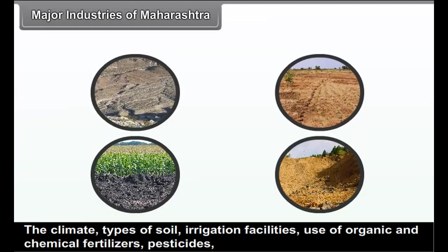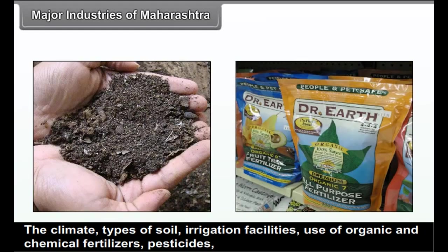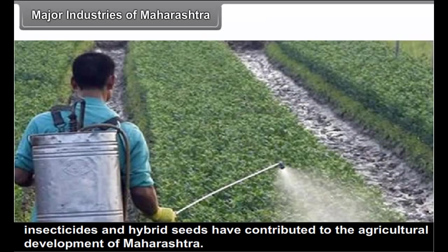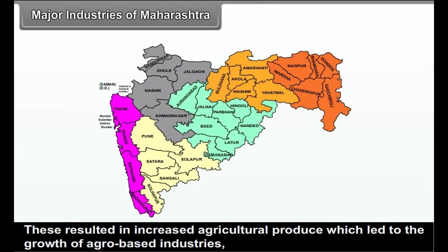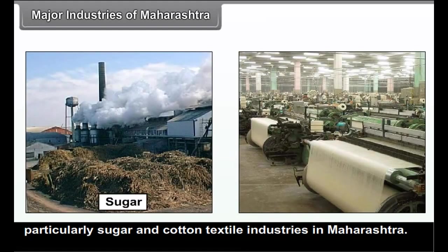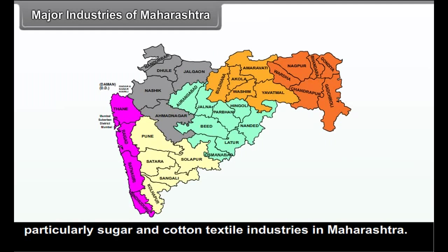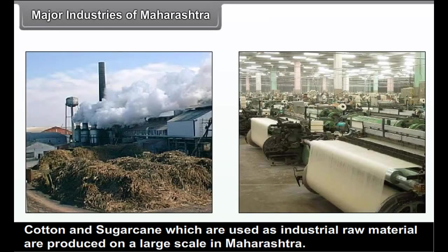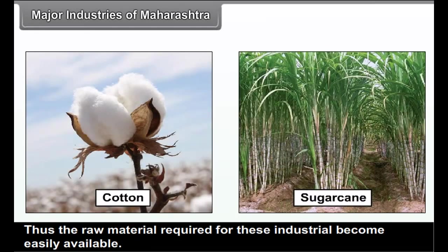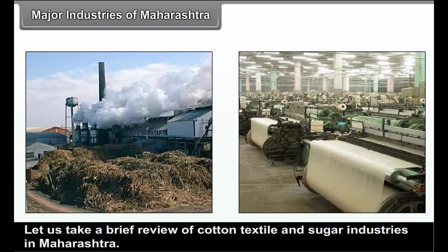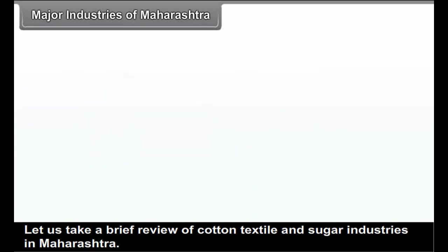The major agro-based industries of Maharashtra resulted from increased agricultural produce, which led to the growth of agro-based industries, particularly sugar and cotton textile industries. Cotton and sugarcane, which are used as industrial raw materials, are produced on a large scale in Maharashtra. Thus, the raw material required for these industries becomes easily available.